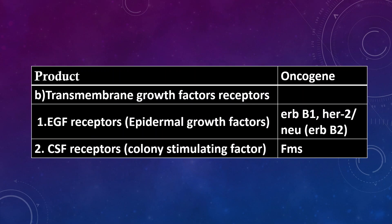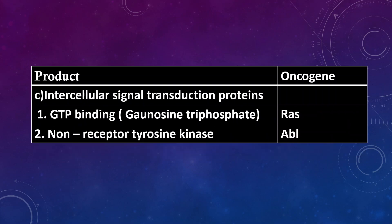Transmembrane growth factor receptors: 1. EGF receptors, epidermal growth factors — oncogenes are ERBB1, HAR2, NEU or ERBB2. 2. CSF receptors, colony stimulating factor — oncogene is FMS.